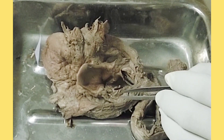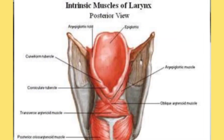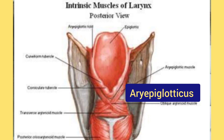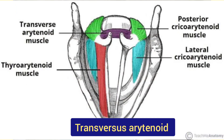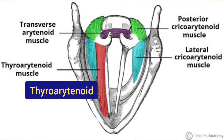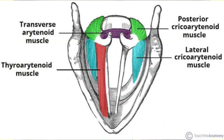The intrinsic muscles are many, and all are paired except the transversus arytenoideus, which is the only unpaired muscle of the larynx. The intrinsic muscles are: cricothyroid, oblique arytenoideus, aryepiglotticus, transversus arytenoideus, lateral cricoarytenoideus, posterior cricoarytenoideus, thyroarytenoideus, and thyroepiglotticus. All these are intrinsic muscles of the larynx.